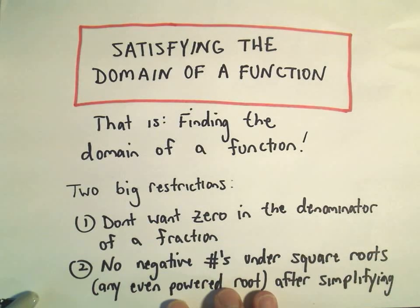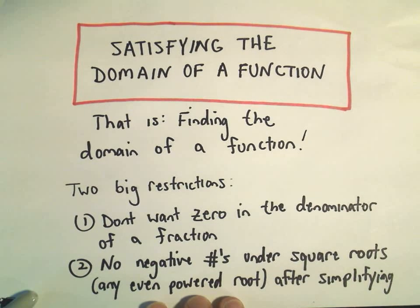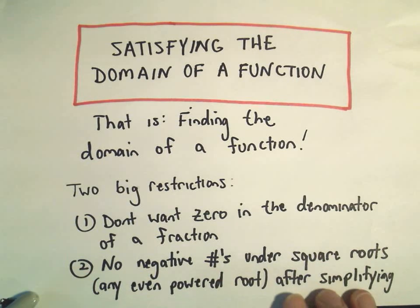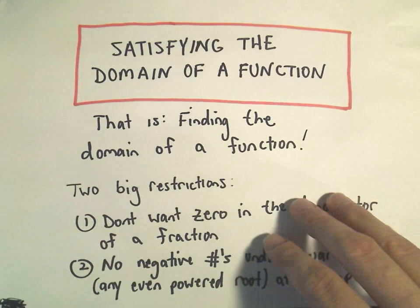And if there's any square roots, or really any even powered root, we don't want any negative numbers to appear underneath that radical after we simplify and do all the arithmetic.